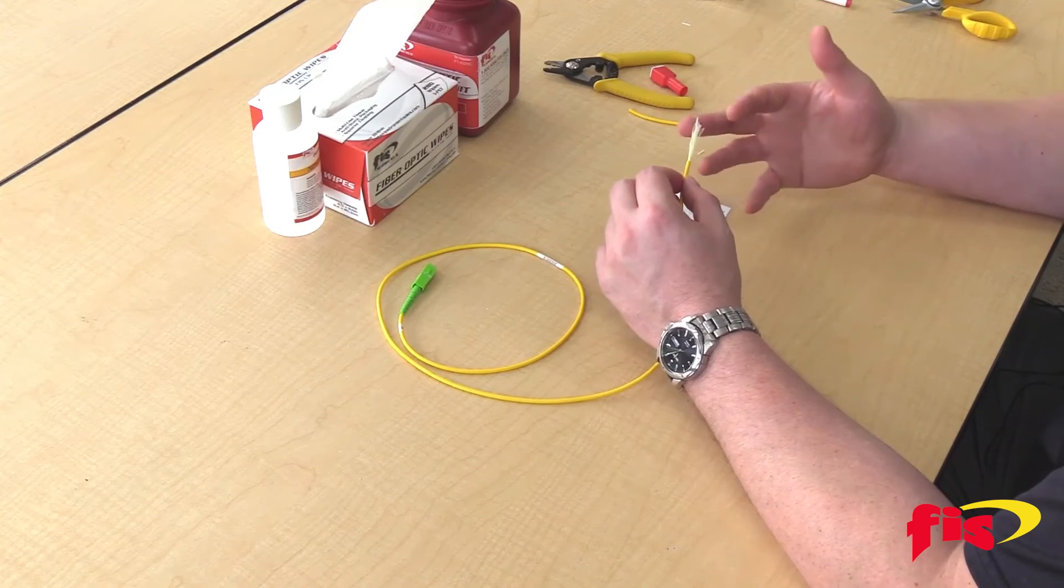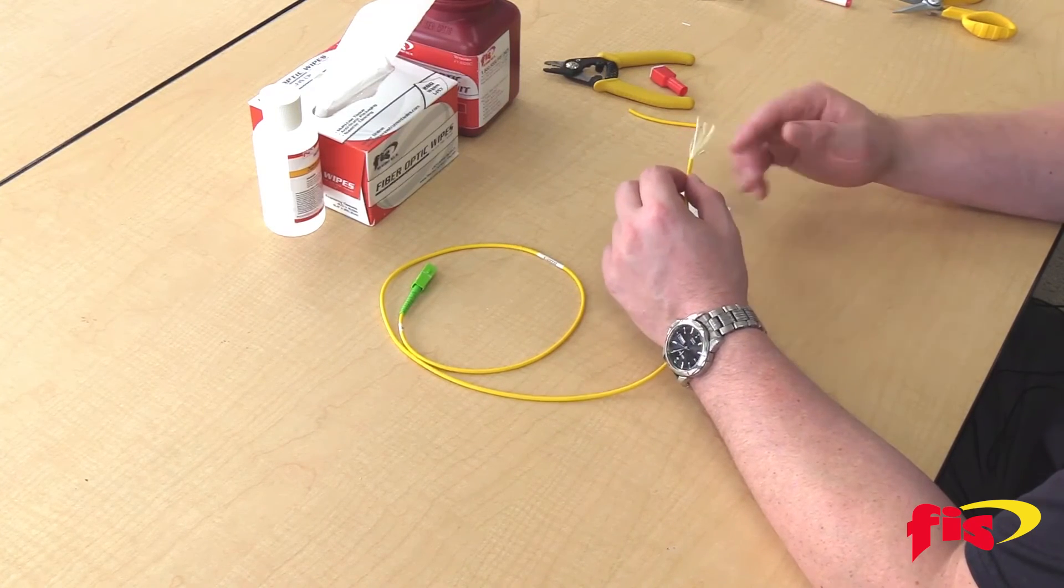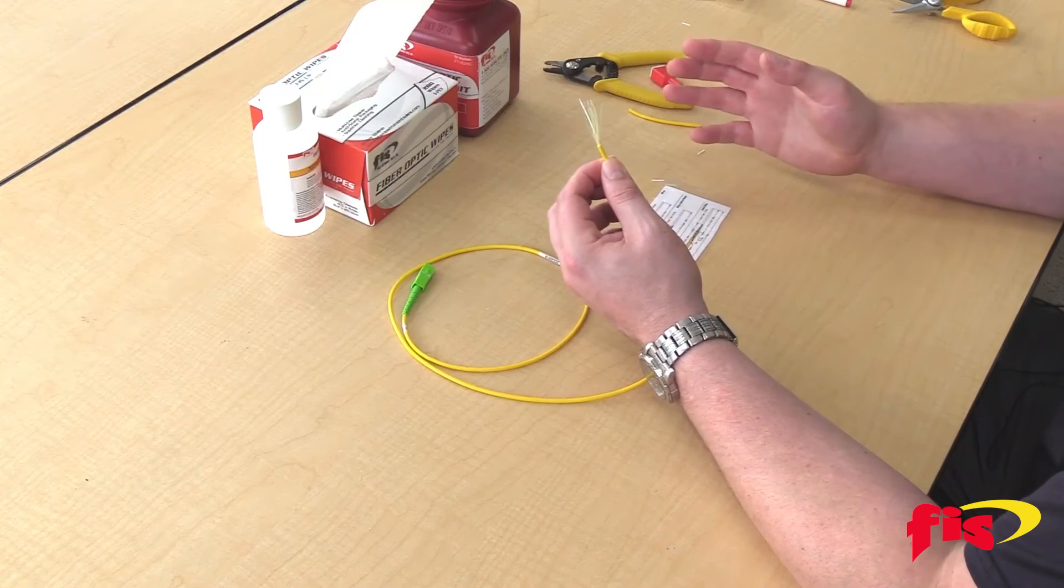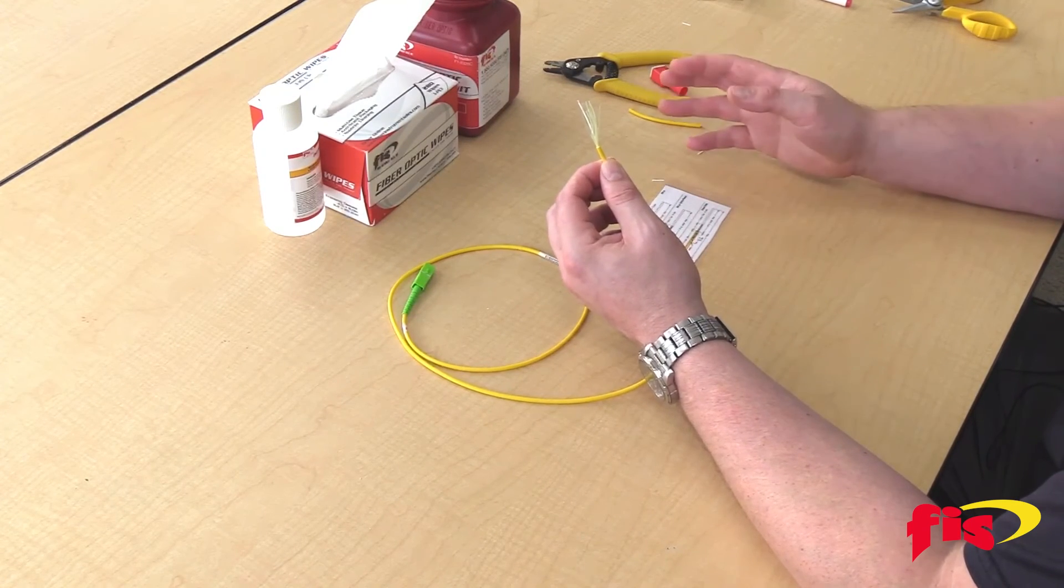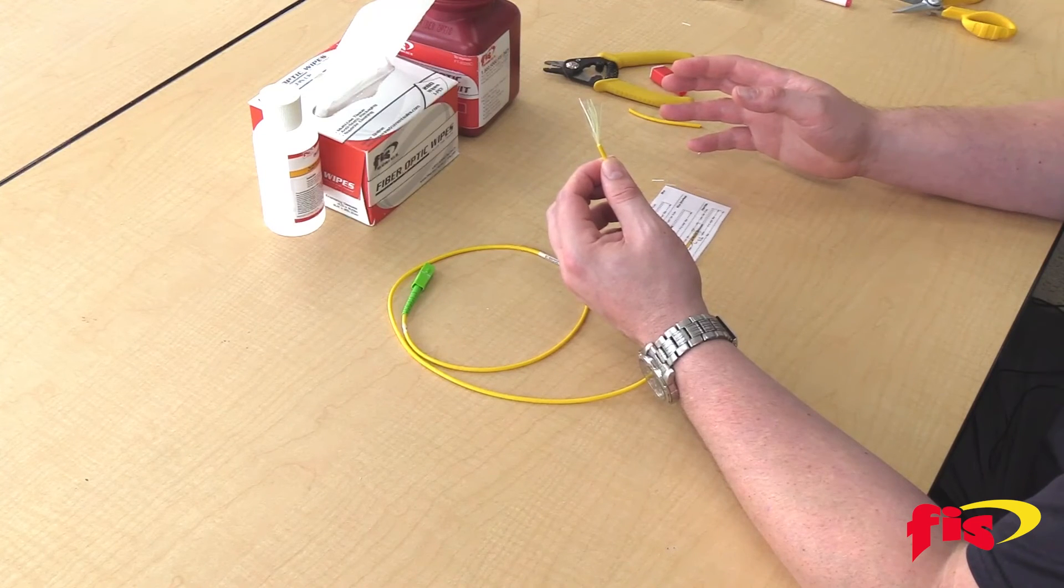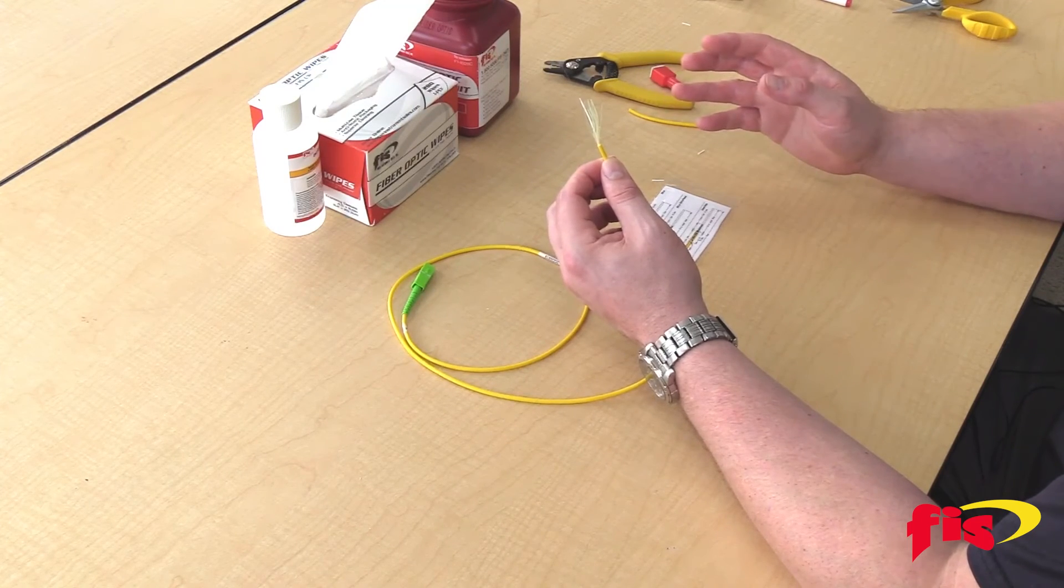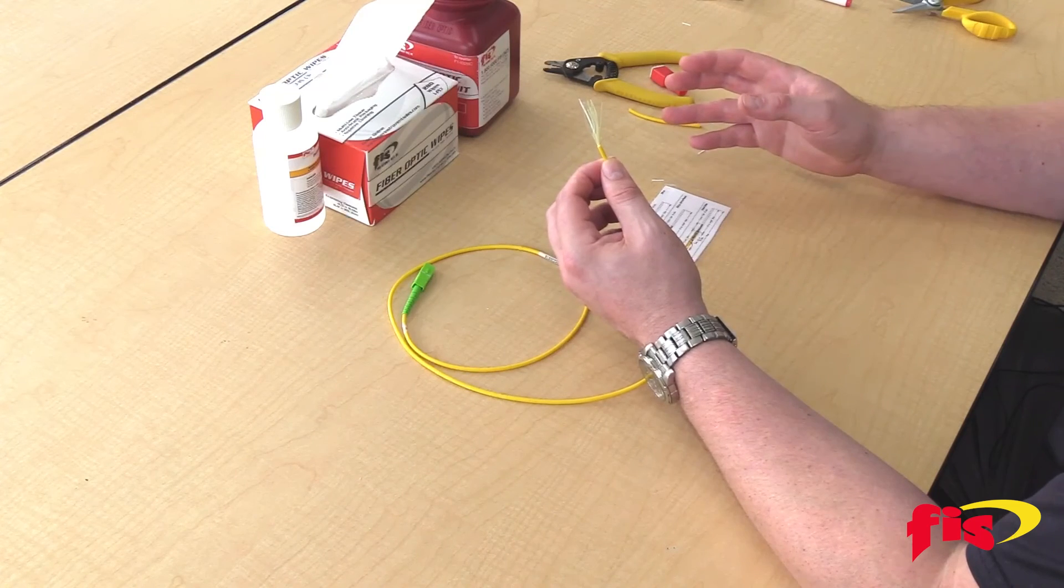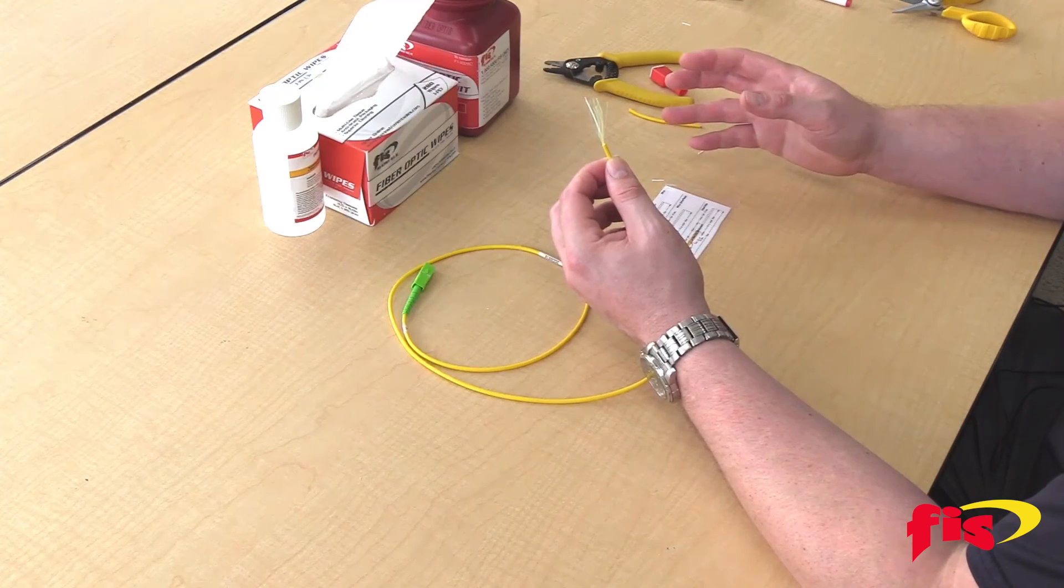Essentially, once I got the acrylic coating off, I'm ready to cleave the fiber. Once you cleave the fiber, you never want to clean it again. You want to then place it in your splicer or directly insert it into a connector for mechanical termination, if that's what you want to do.